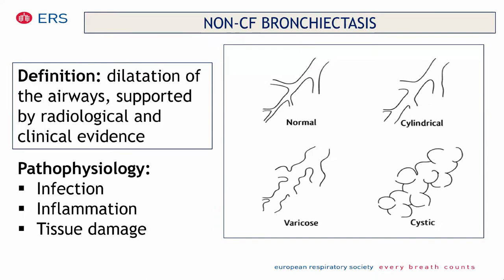What is the definition of non-CF bronchiectasis? Non-CF bronchiectasis is a dilatation of the airways that is supported by radiological and clinical evidence. We'll see later which are the clinical symptoms. The bronchiectasis can be divided into cylindrical, varicose, and cystic. When you have cystic bronchiectasis, the lesion of the bronchial wall is irreversible. About the pathophysiology, there is a vicious circle between infection, inflammation, and tissue damage.